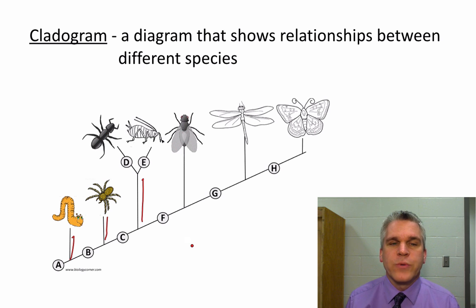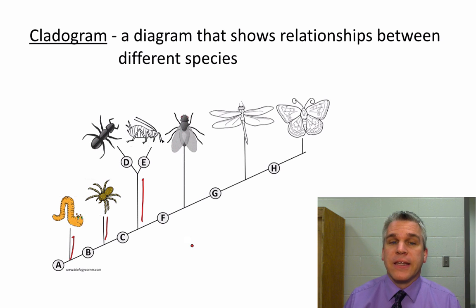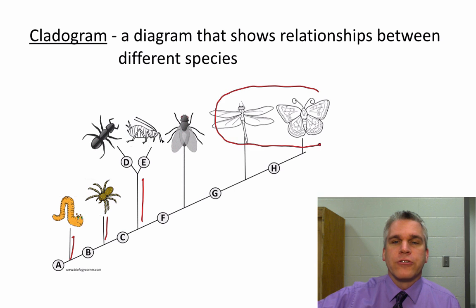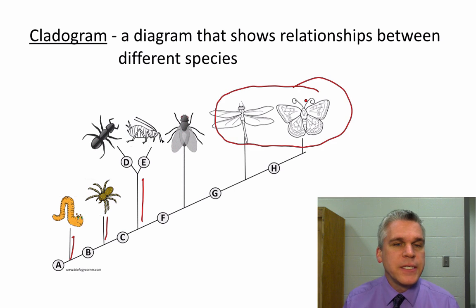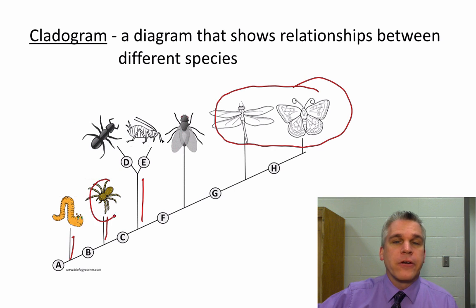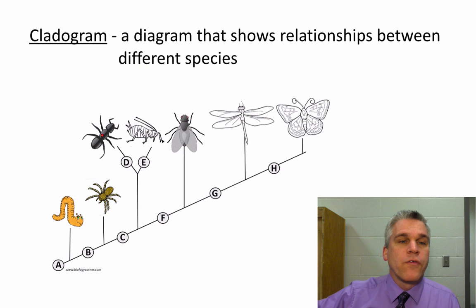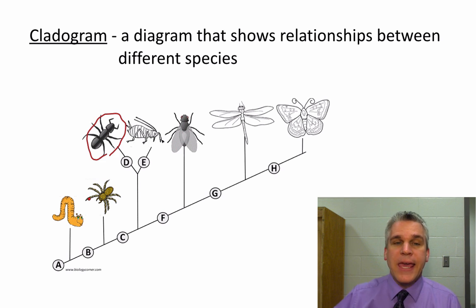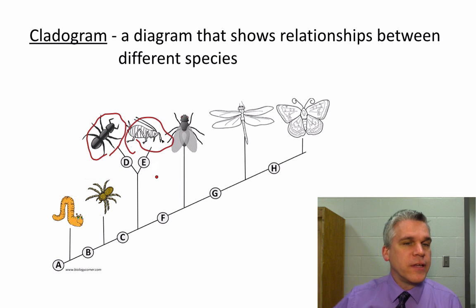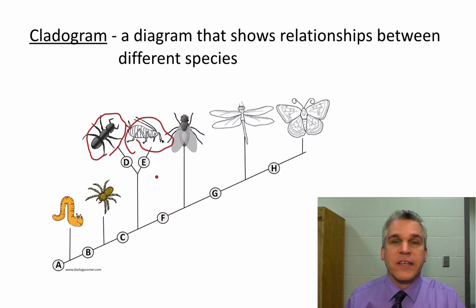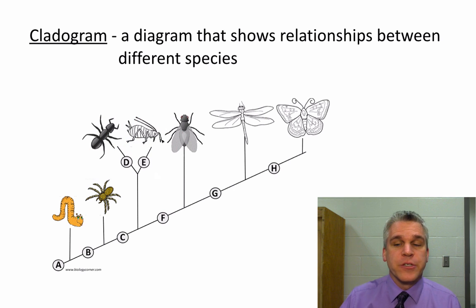Within each branch, we see different characteristics that we can use to show degrees of relatedness. For instance, the butterfly and the dragonfly are two closely related species in this cladogram — more closely related than the spider is to the butterfly. So if I wanted to say what other animal is most closely related to the ant, we would say it's the aphid. That's one of the nice things about cladograms: they can show us these relationships between different species.